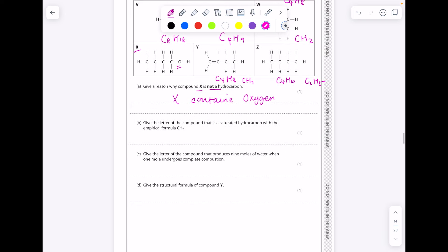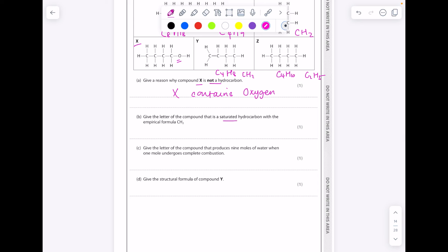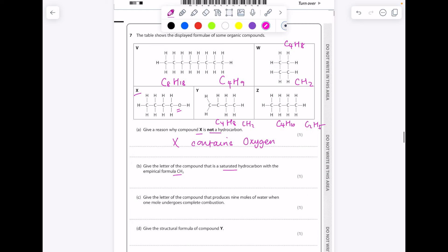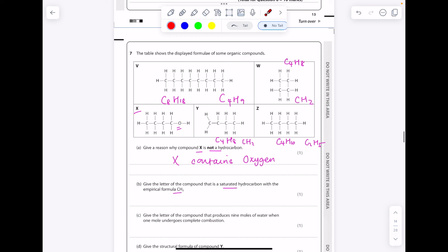Give the letter of a compound that is a saturated hydrocarbon with the empirical formula CH2. So I worked out both of these compounds have an empirical formula of CH2, but we're after a saturated hydrocarbon, one with single bonds only, which is why it's W.